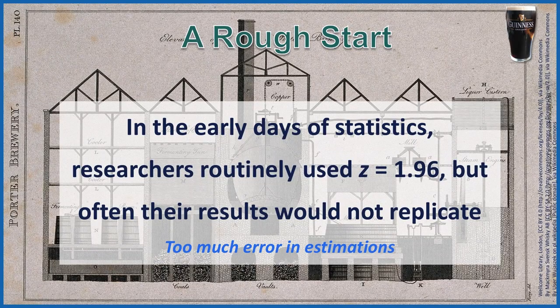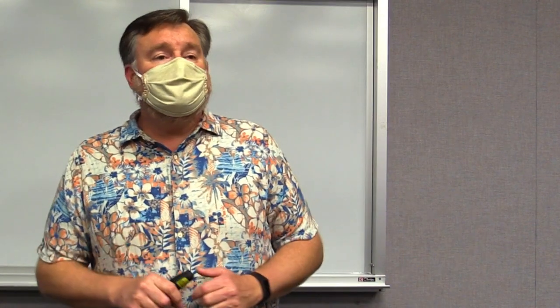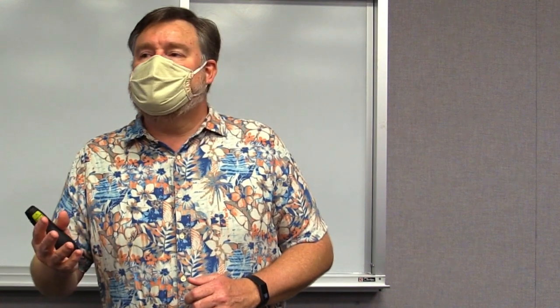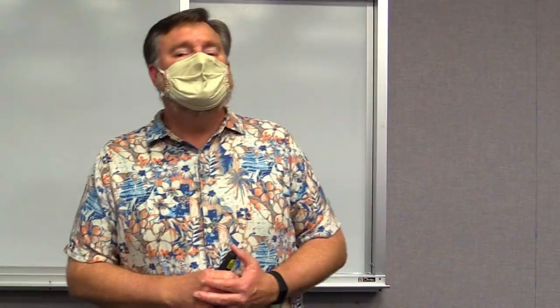What began to happen in the early days of statistics was researchers would do a project, calculate statistics, and yet their results wouldn't replicate. There was too much variability in the results. With large sample sizes, the standard deviations approximated normality. But with small sample sizes, the amount of error in the estimations increased dramatically, resulting in a biased estimator for the population standard deviation.